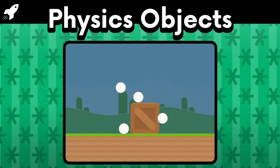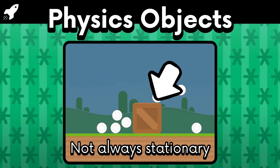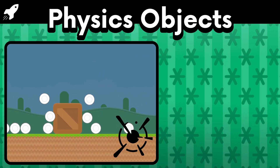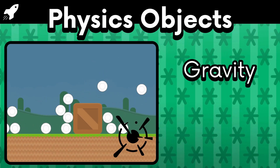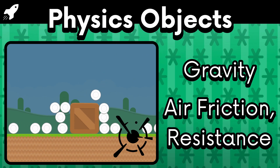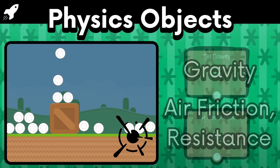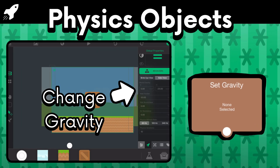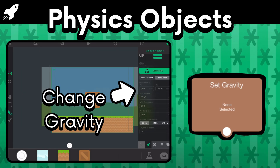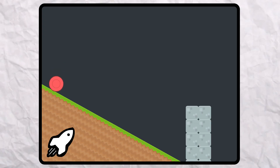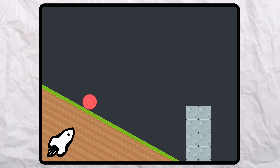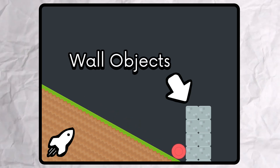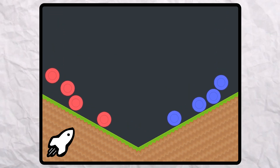Physics objects are not always stationary, as they can react to physical forces like gravity and air resistance. These forces can be controlled by behaviors, and there is a global setting for adjusting gravity. Physics objects can physically interact with wall objects or other physics objects.